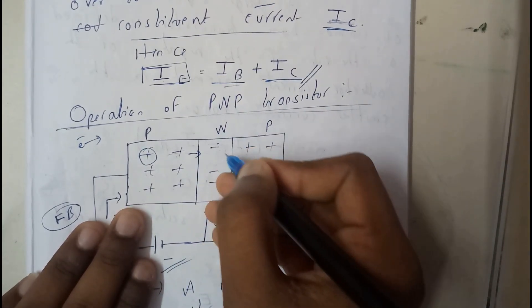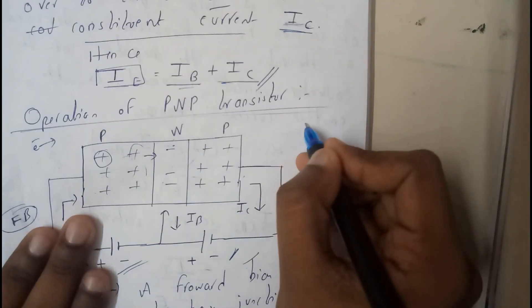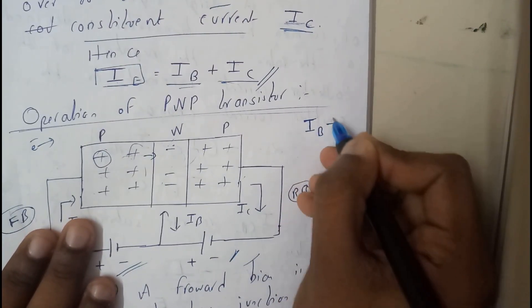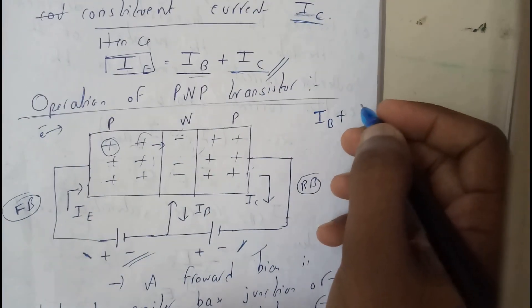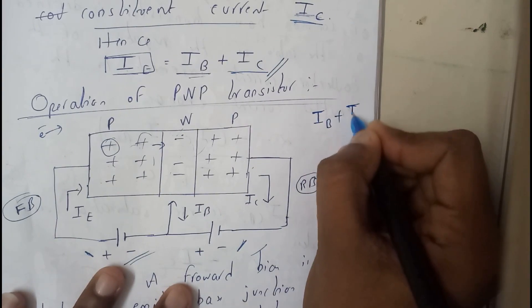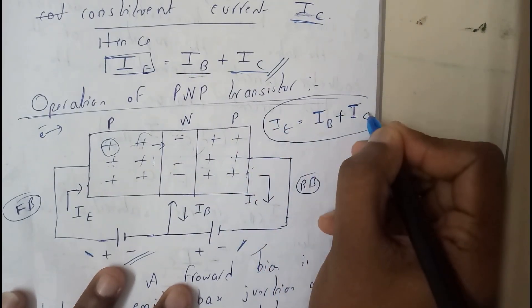There are very few number of electrons, so few of them combine with them to form a small current, that is I_B. And once they reach here also, they start trying to recombine and form some amount of current, that is I_C. So basically, I_E is nothing but this.